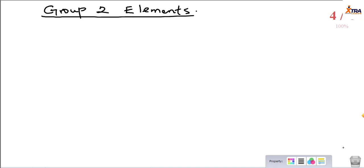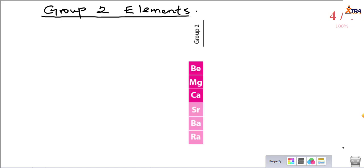Hello guys, welcome back. In this lecture we shall discuss the group 2 elements of the periodic table. In the previous lectures we discussed group 1 elements, we gave their alternative names, we mentioned the elements present in that group and some of their chemical and physical properties. Now let's follow the same pattern for this lecture: discussing their groups, the elements belonging to this group, and their physical and chemical properties.